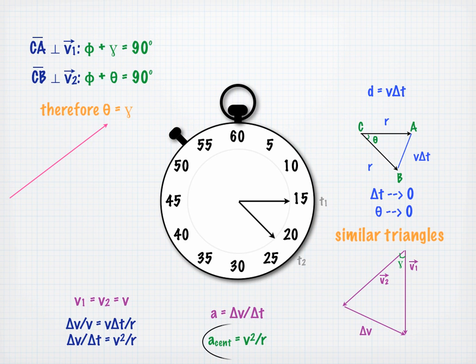Centripetal acceleration equals V squared over R. So the centripetal acceleration of an object moving in uniform circular motion is always directed toward the center of the circle of motion, and it has a magnitude of V squared over R, where V is the speed of the object and R is the distance from the object to the center of the circle of motion.